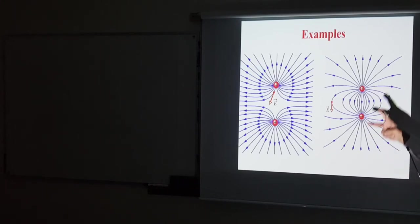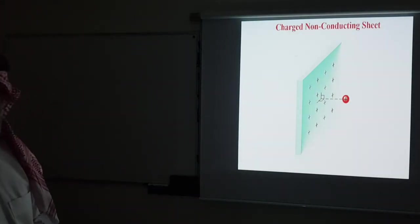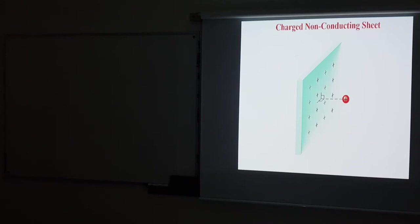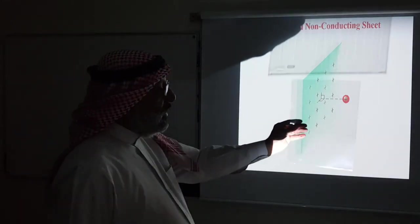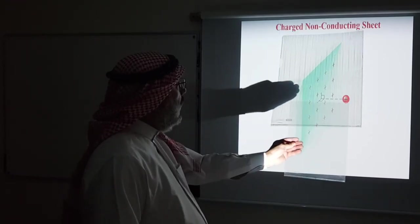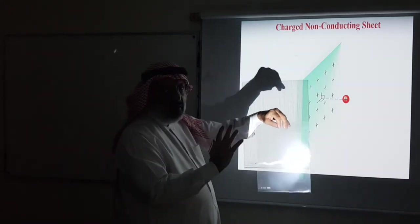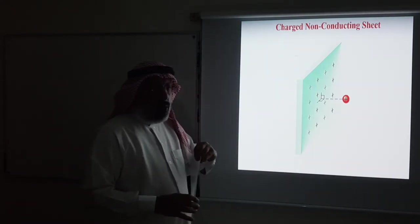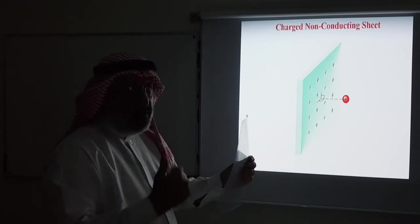Another important object is the charged non-conducting sheet. Non-conducting means it is made of an insulating material such as wood, paper, or plastic. Suppose we place charges on such a sheet — what is the electric field at points surrounding it on both sides? For simplicity, we assume the sheet is infinite, extending to plus and minus infinity. This is a valid assumption when we are looking for the field at a point very close to the sheet, where the distance to the sheet is much less than the sheet's dimensions.